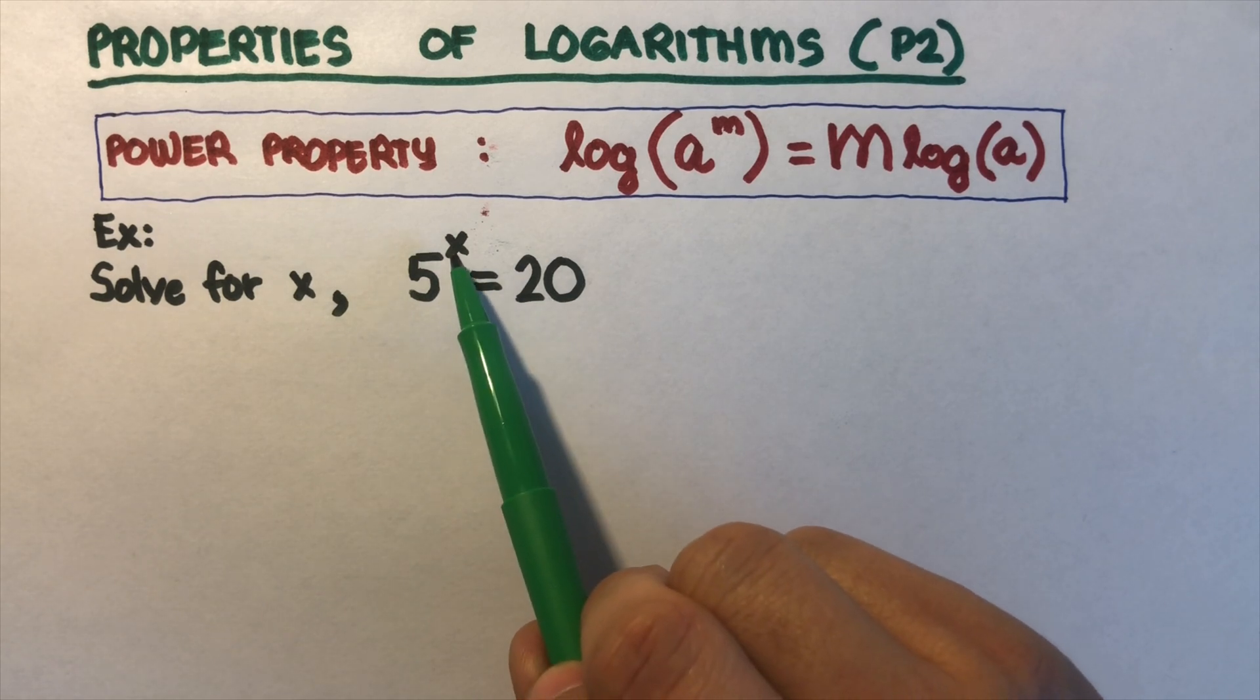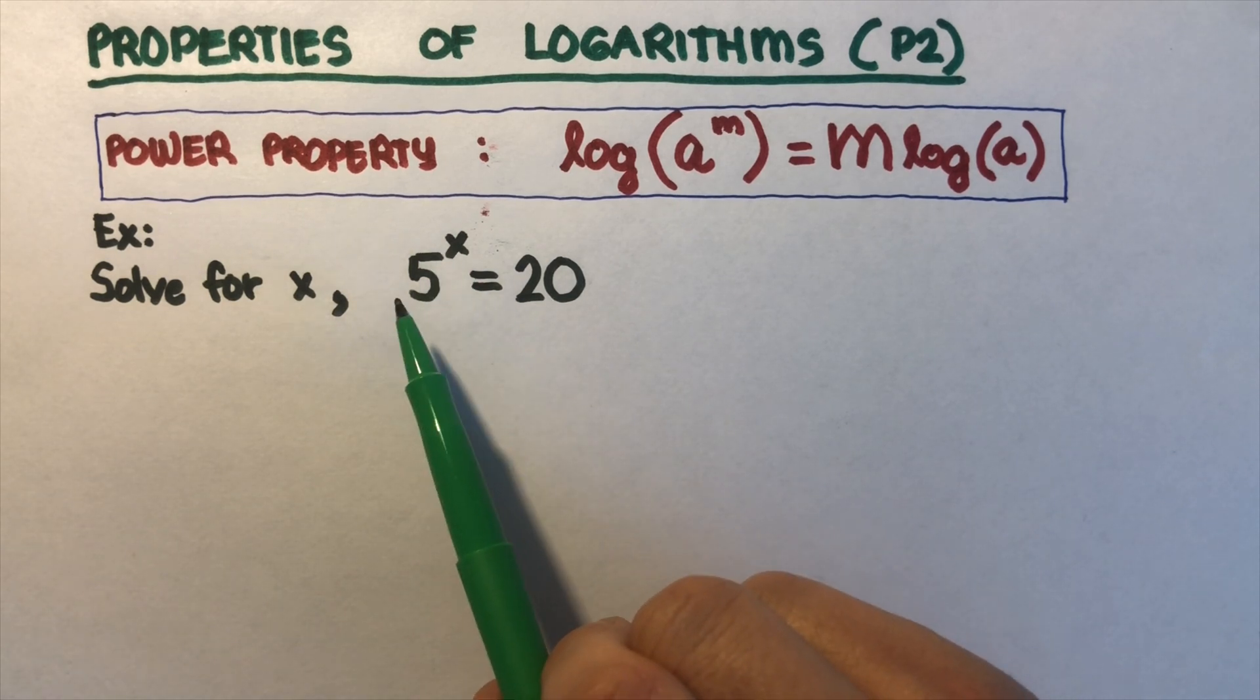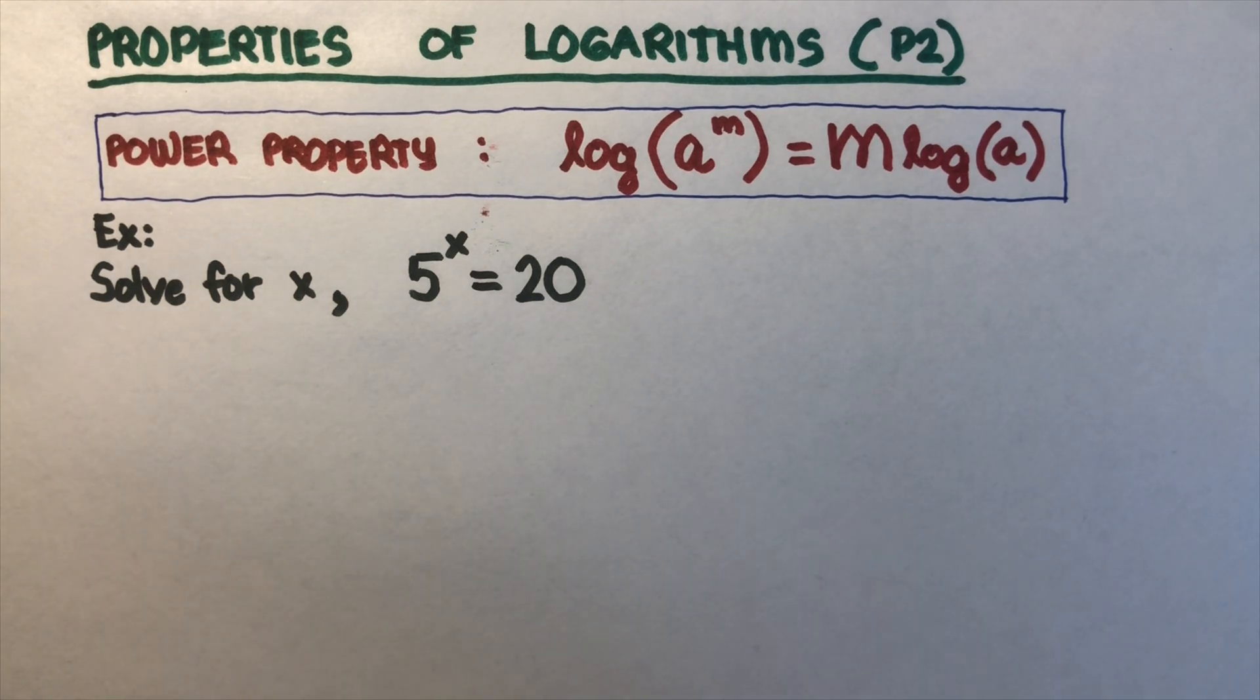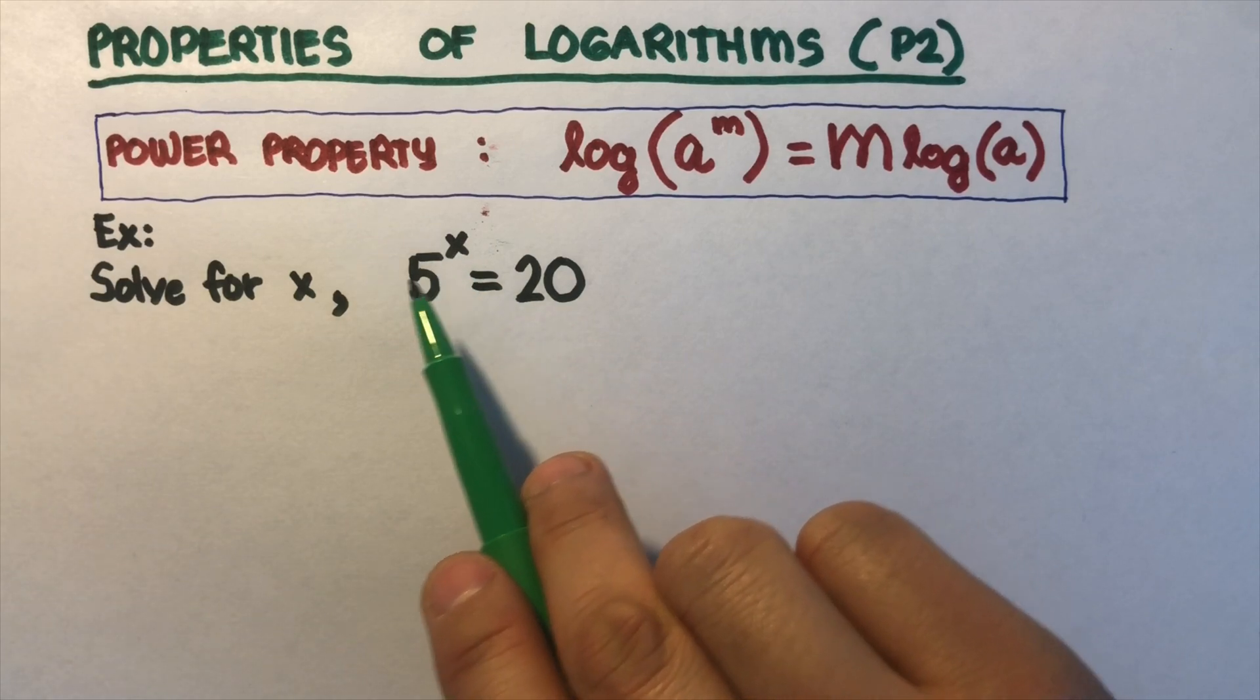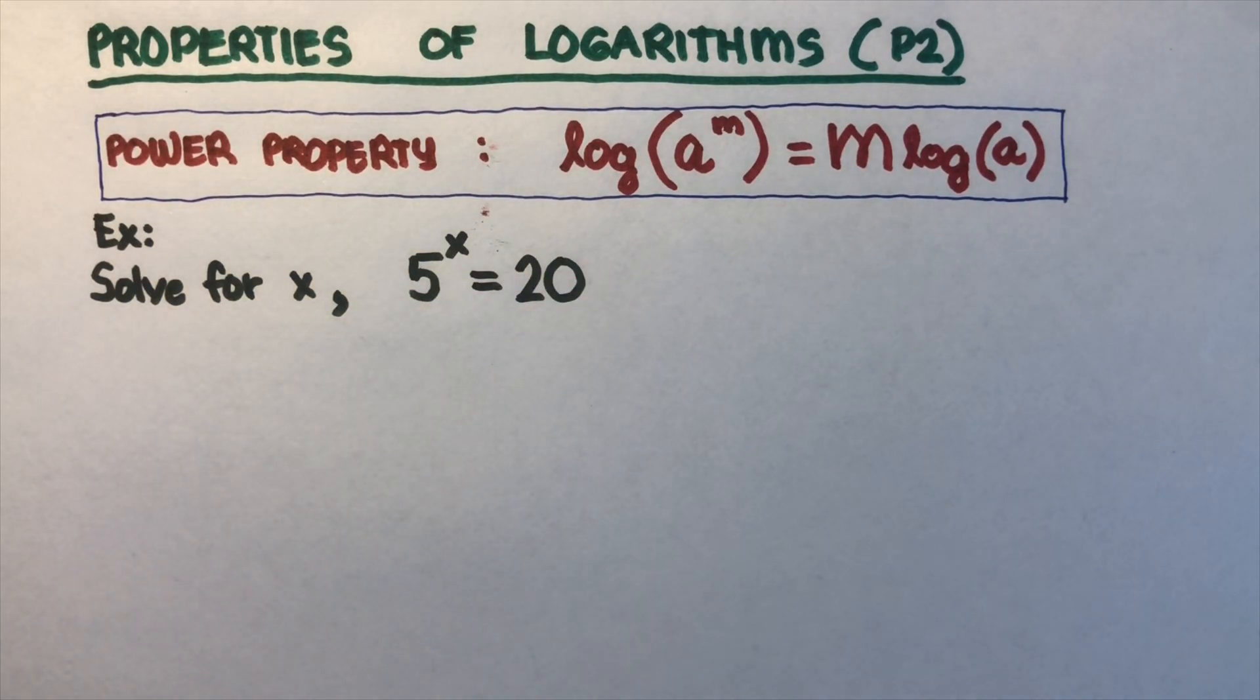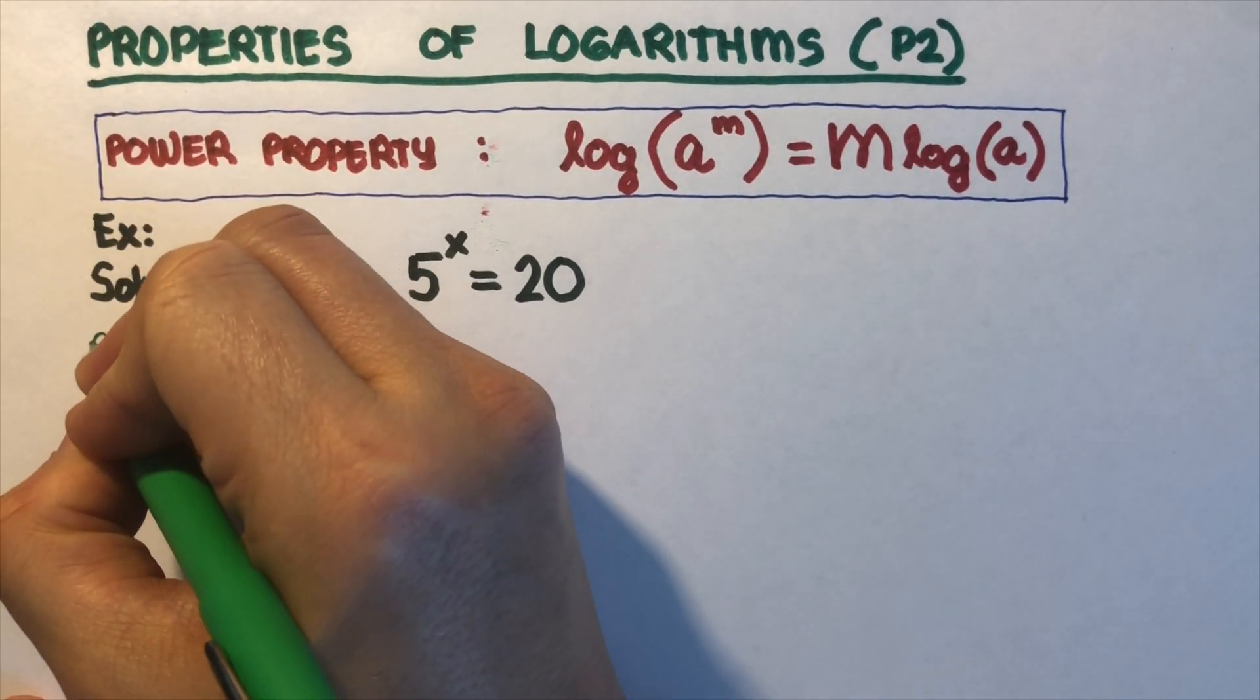So that means this x should be between 1 and 2. Is it 1.5? Is it 1.7? We don't know what it is. So this has to be a decimal between 1 and 2. We are going to go to the steps using the power property to solve for x. I'm going to write the steps right here on this side.